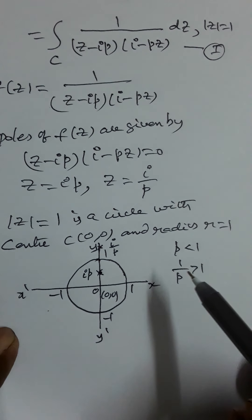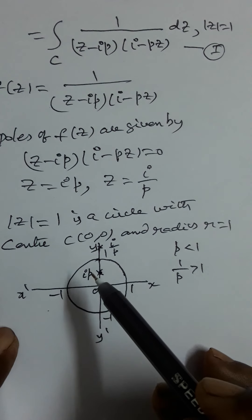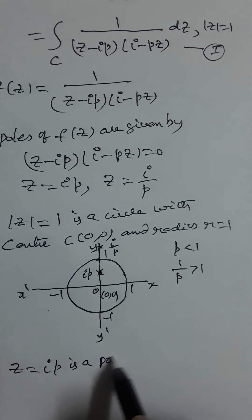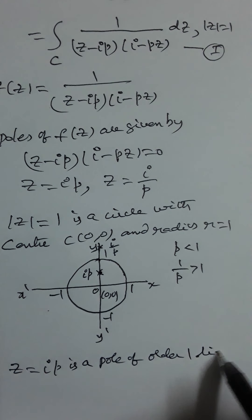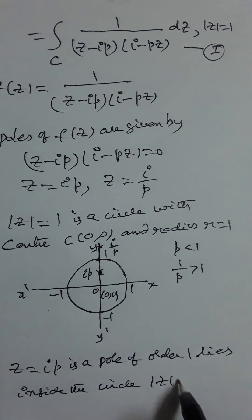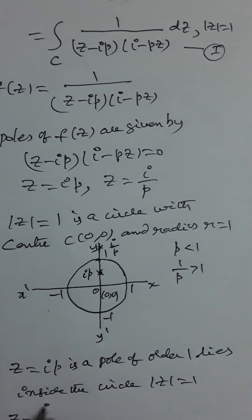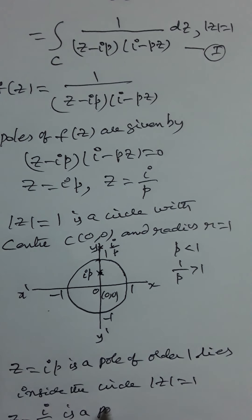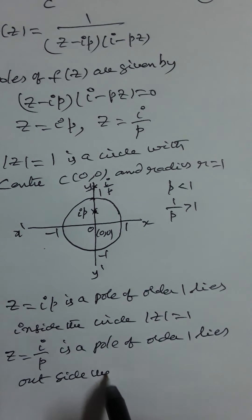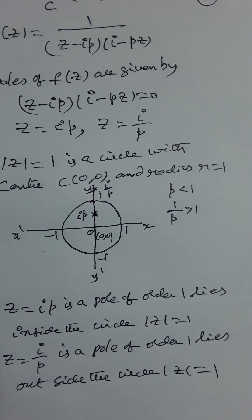Setting the denominator to zero gives z = ip and z = i/p. The contour |z| = 1 is a circle with center (0, 0) and radius 1. Since p < 1, we have 1/p > 1, so z = i/p lies outside the circle, while z = ip lies inside. Thus z = ip is a simple pole inside the circle, and z = i/p is a simple pole outside.